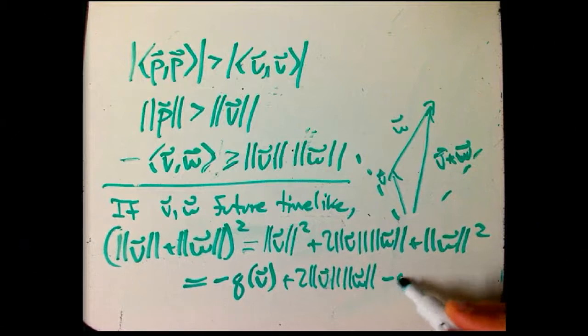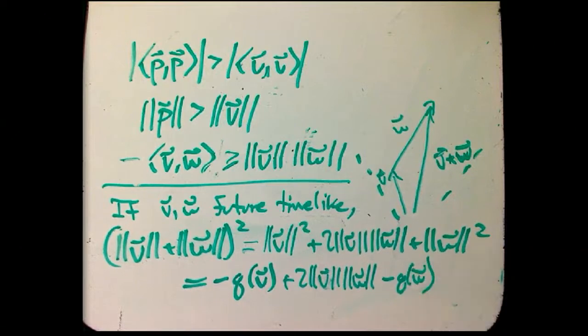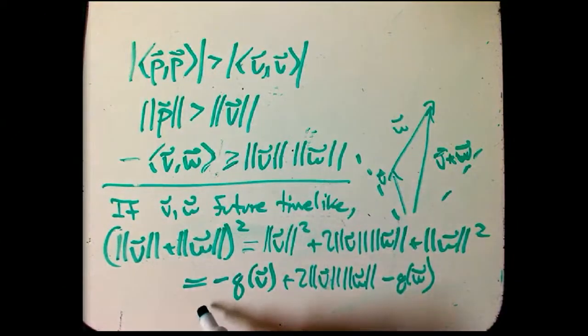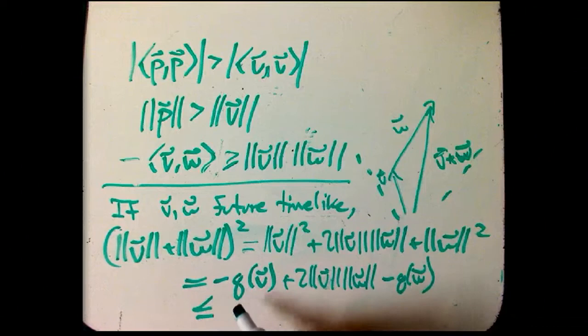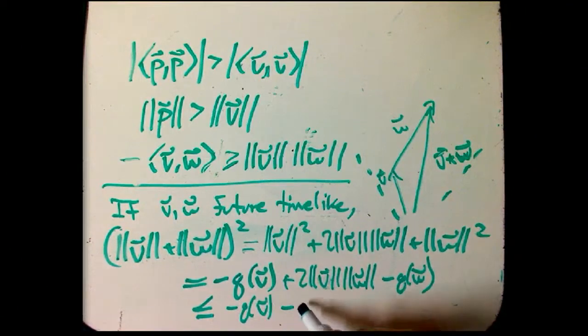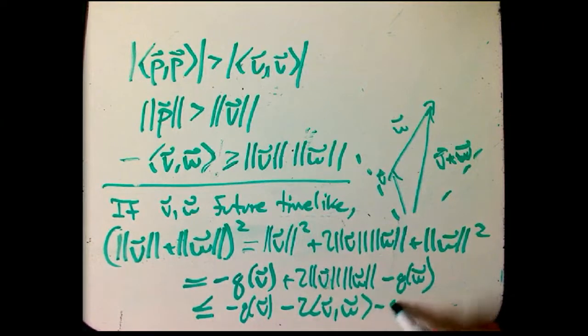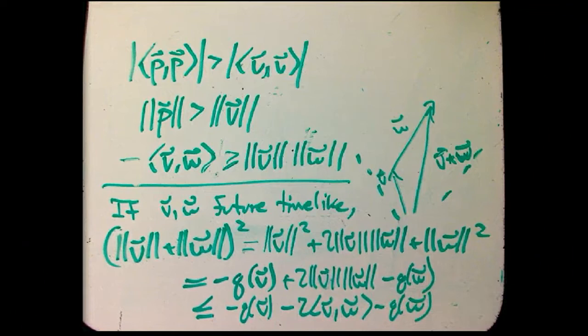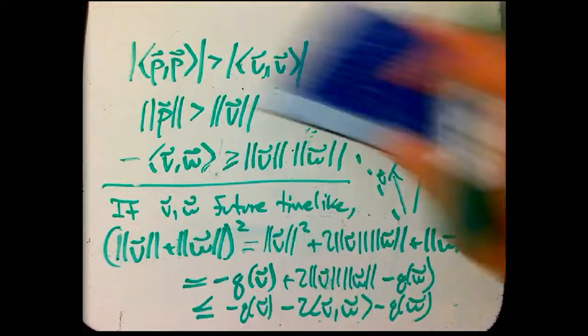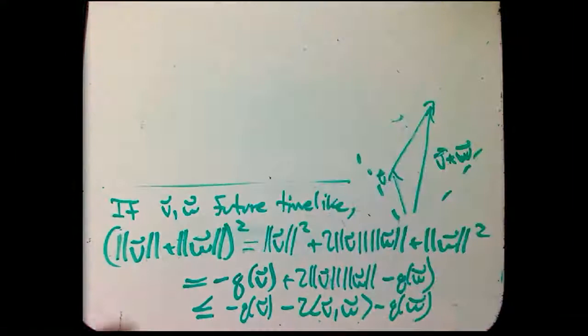And then, that's minus Q of W. This is really exactly what I did before in Euclidean case, just being a little more careful with science. Now, I put in this inequality. Okay. So, that's going to be less than or equal to, and I'm just going to leave the minus Q unchanged, minus 2 scalar product of V with W, minus Q of W. And what is that? That's V with V, W with W, V with W, all with an overall minus sign. So, I've used this. I can get rid of it now.